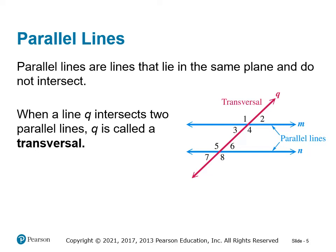Interior angles are the ones that are inside or between the two parallel lines — angles three, four, five, and six. Exterior angles, like angles one, two, seven, and eight, are outside of the parallel lines. That vocabulary will help with what's coming up.